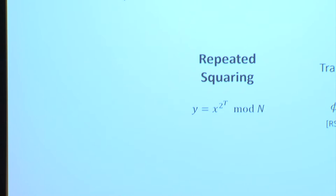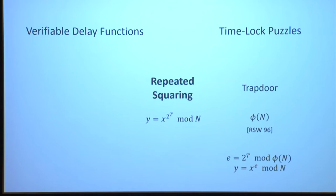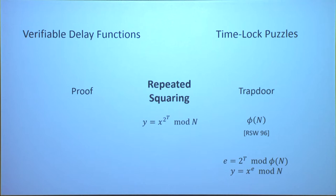Which brings us to repeated squaring. Rivest, Shamir, and Wagner suggested using this as a time-lock puzzle, where the trapdoor is the order of the multiplicative group — phi of n. If you know phi of n, you can first reduce the exponent 2 to the t mod phi of n, and then compute the output with just one additional exponentiation. Getting VDFs out of repeated squaring turns out to be much more tricky. You can always use phi of n to verify the output fast, but we want everyone to be able to verify. If we just publish phi of n, the function becomes easy to compute. It turns out there are more sophisticated ways to prove y equals f of x without using the trapdoor, discovered very recently in two beautiful independent works.